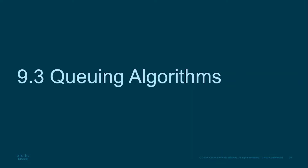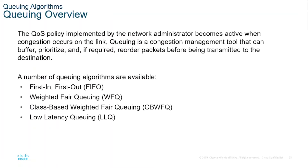This is section 9.3 on queuing algorithms, part 2 of module 9 of the Cisco curriculum. The previous topic covered traffic characteristics, and this topic will explain the queuing algorithms used to implement QoS or quality of service. The QoS policy implemented by the network administrator becomes active when congestion occurs on the link. Queuing is a congestion management tool that can buffer, prioritize, and if required, reorder packets before being transmitted to the destination.